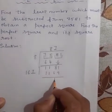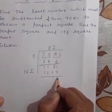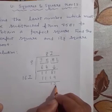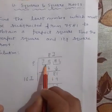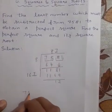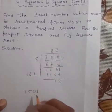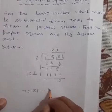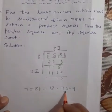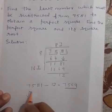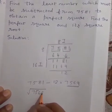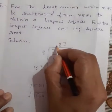Find the remainder, that is equal to 12. The remainder is not equal to 0, so we must subtract 12 from 7,581 to make it a perfect square. Subtracting 12 from 7,581 gives us 7,569. This is the perfect square, and the square root of 7,569 is equal to 87.